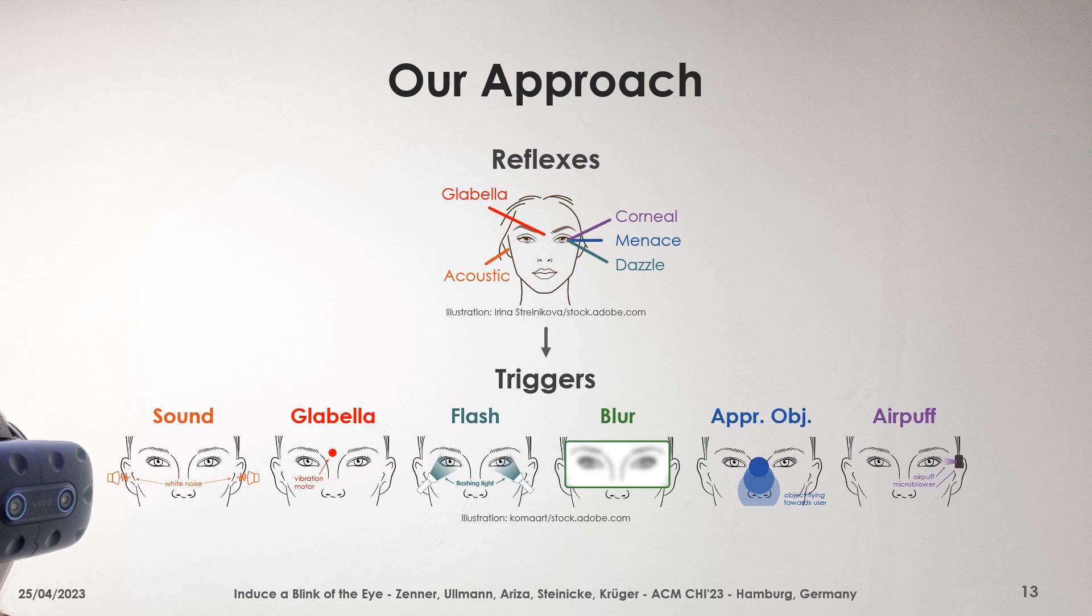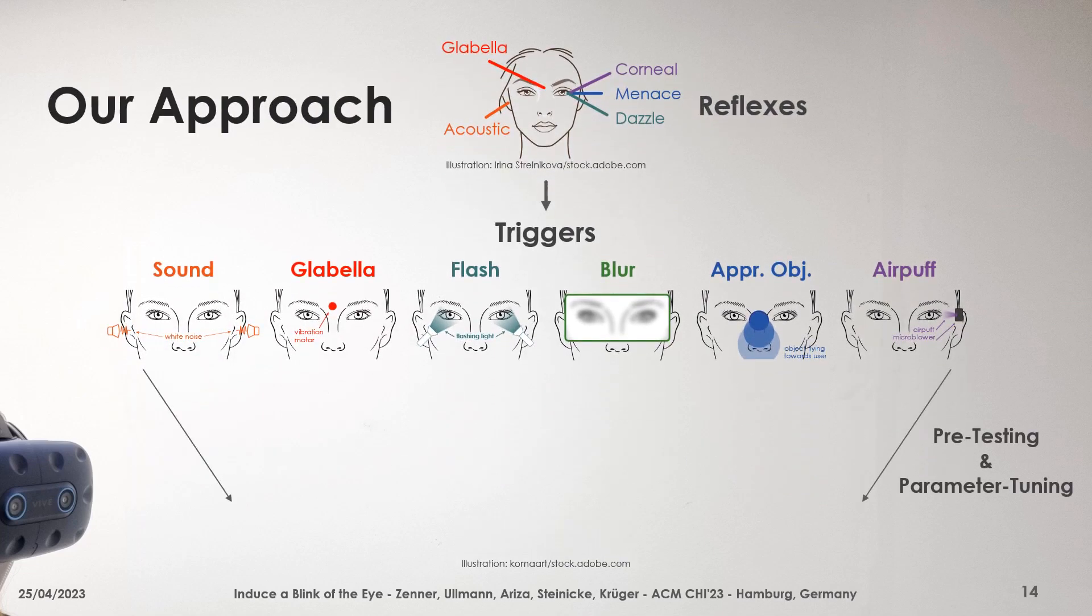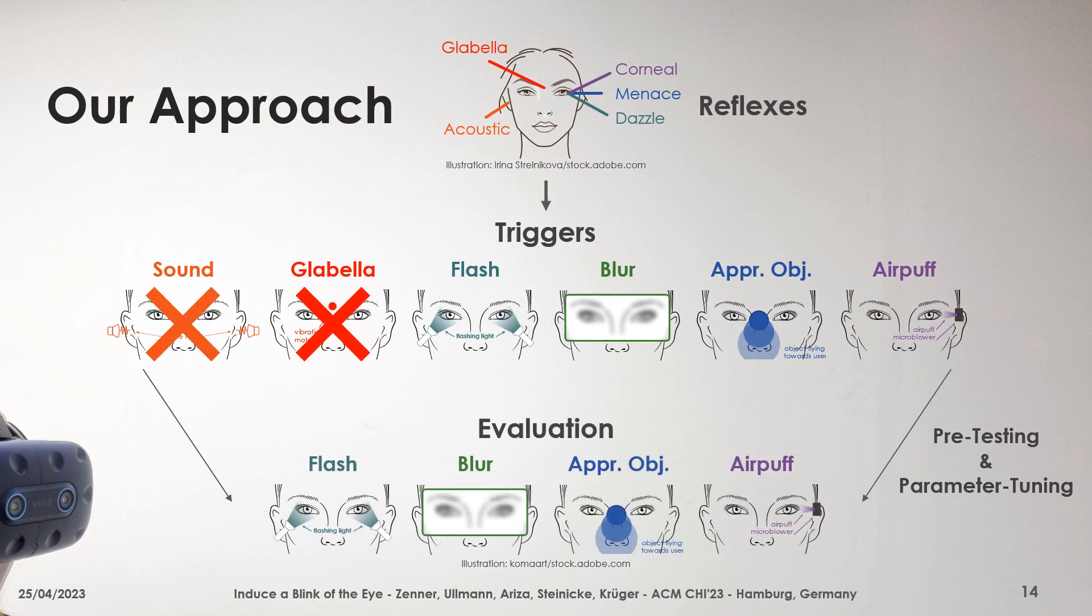Specifically, we started out with six different triggers derived from a set of well-known blink reflexes. Following extensive pre-testing and parameter tuning, we filtered for the most promising approaches to compare them in a user study. During this pre-testing phase, we decided to dismiss two initial trigger concepts and arrived at four final blink trigger methods, demonstrated in the following video clips.